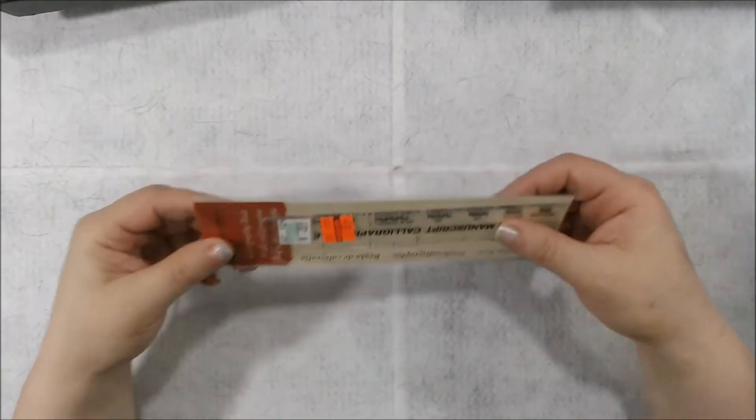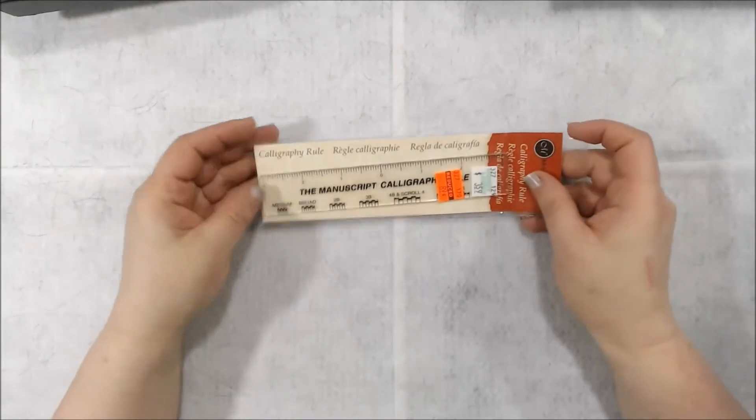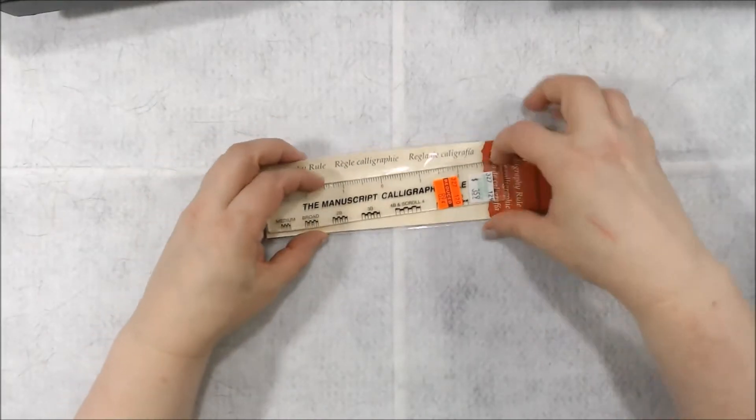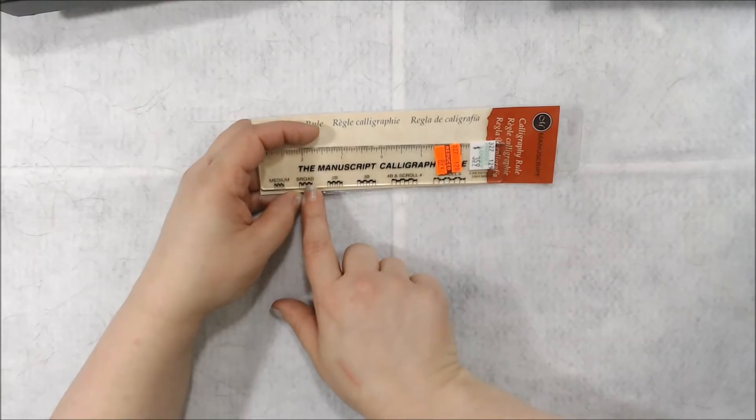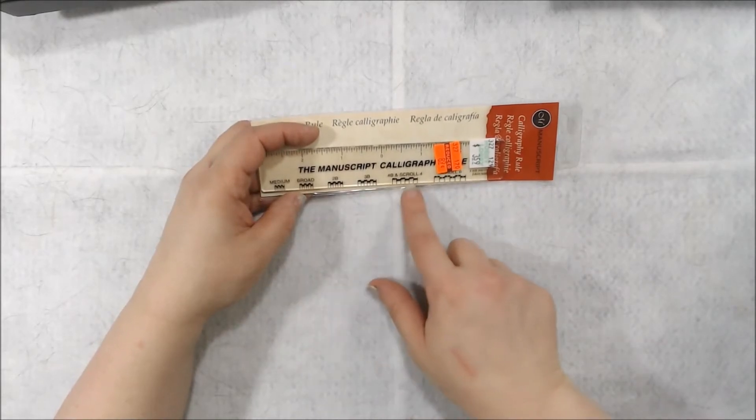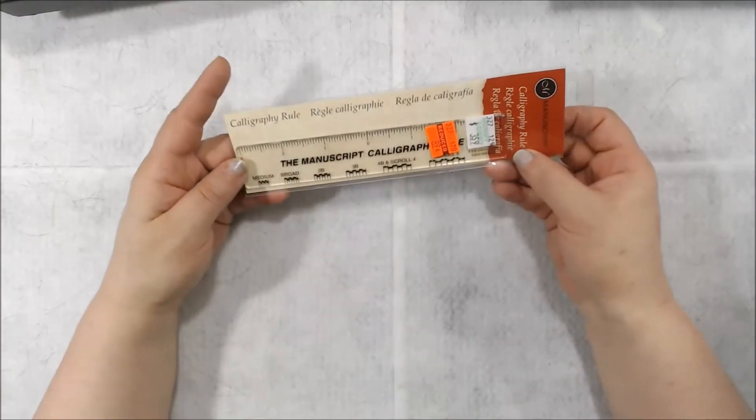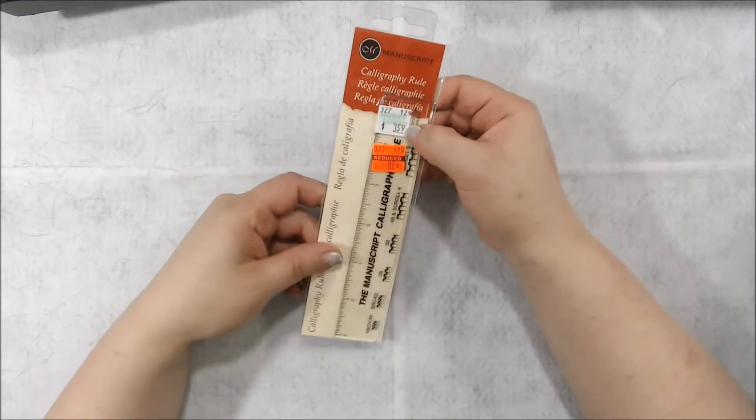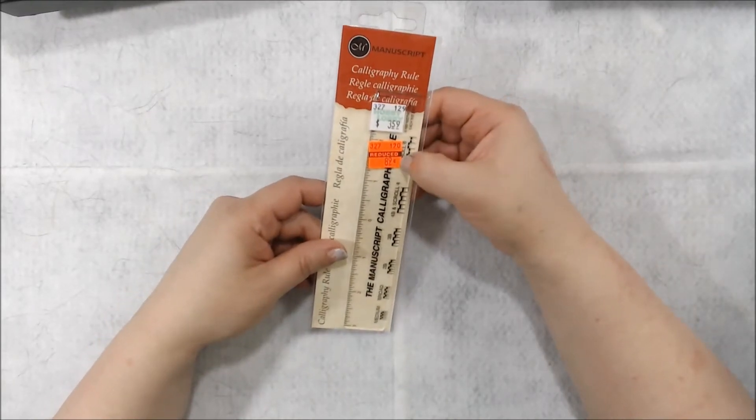I thought since there's this ruler that's showing different things on the broad, 2B, 3B, all this, I thought this would be good to get to be on the safe side. It was normally $3.59. I got it for $0.89.